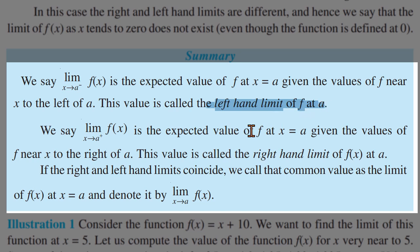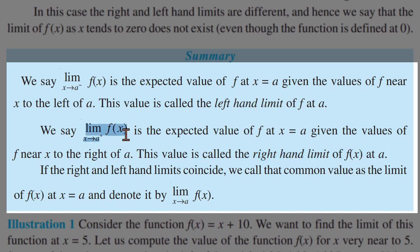Now you can guess the right-hand limit. The right-hand limit approaches from the positive side. For example, x equals a and x equals 0 — we approach from the right, which gives us the right-hand limit of f of x at a.